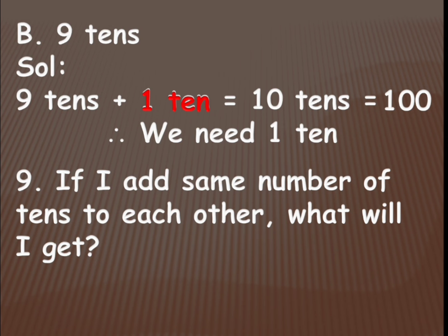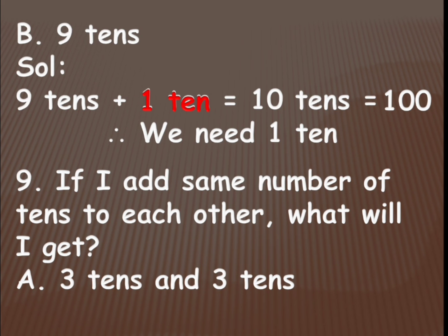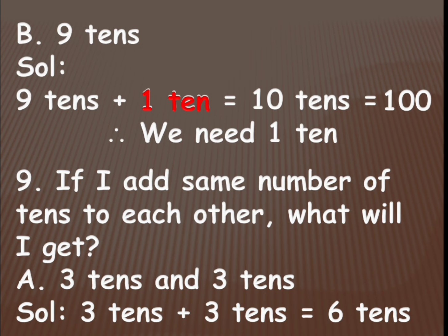If I add the same number of tens to each other, what will I get? That is: 3 tens plus 3 tens equals 6 tens. In the same way, 5 tens plus 5 tens becomes 10 tens — 5 plus 5 — which is nothing but 100. If it is 2 tens plus 2 tens: 2 plus 2 gives us 4, so 4 tens. And 4 tens plus 4 tens: 4 plus 4 becomes 8, so 8 tens. In that way you need to add the same numbers and write the answer.